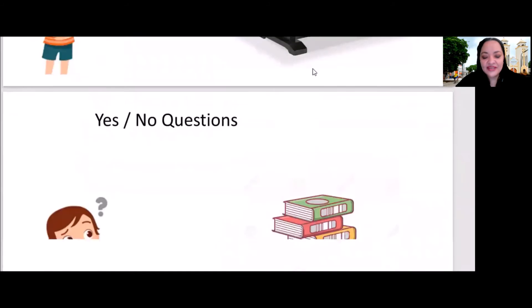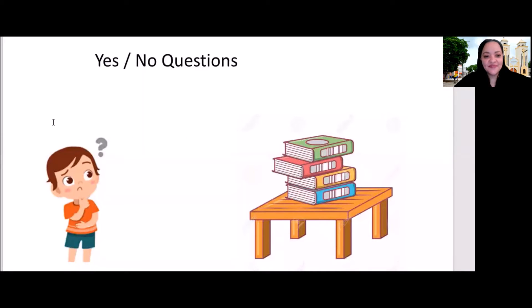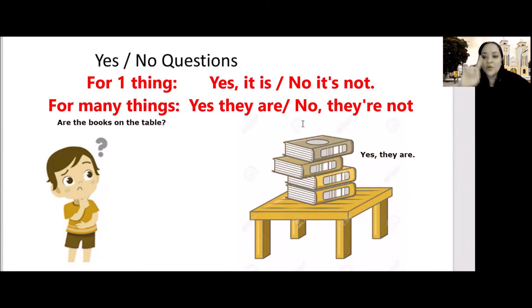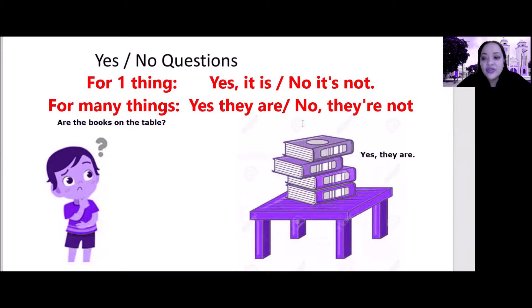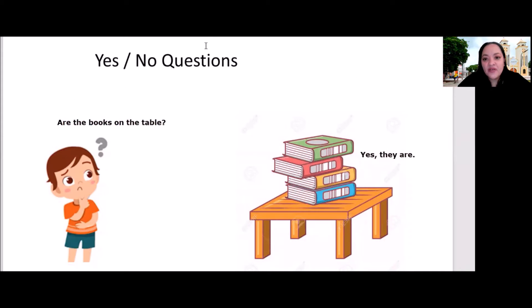How about here? In the same question, are the books on the table? The answer this time is yes. So, yes, they are. Remember, for one thing, yes, it is. No, it's not. For many things, yes, they are. Or, no, they're not. Or, no, they aren't.